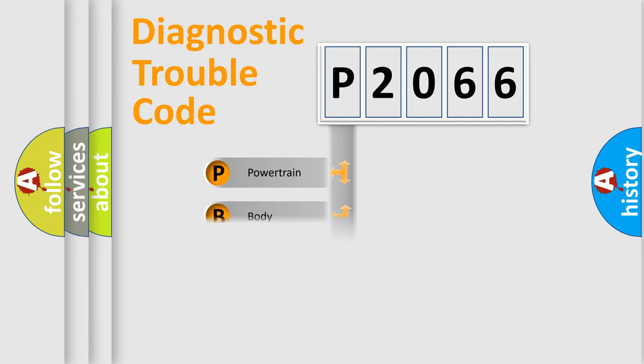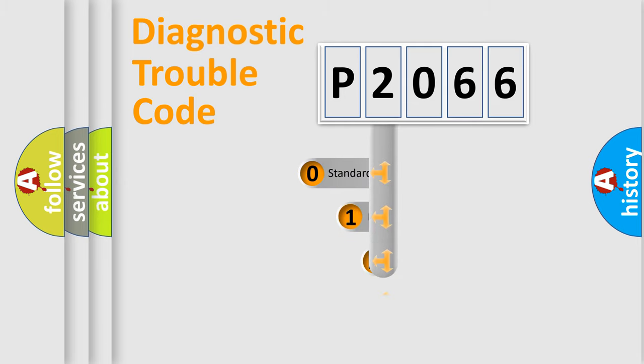Powertrain, Body, Chassis, Network. This distribution is defined in the first character code.